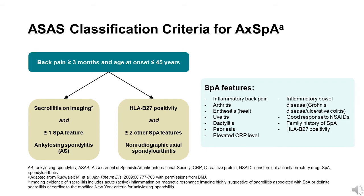Patients with axial spondyloarthritis who have obvious structural changes on radiographs of the sacroiliac joints are classified as having radiographic axial spondyloarthritis, which is for all practical purposes the same as traditional ankylosing spondylitis. Patients who have axial SpA based on symptoms and other clinical features but lack obvious radiographic changes of the sacroiliac joints have non-radiographic axial SpA.